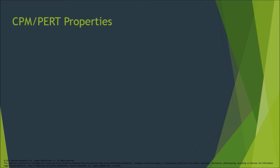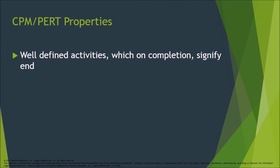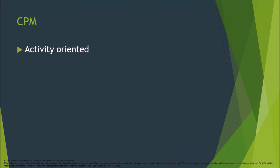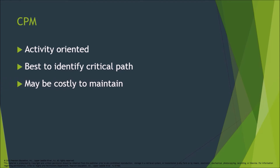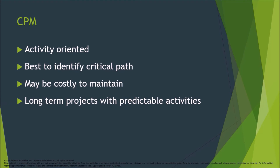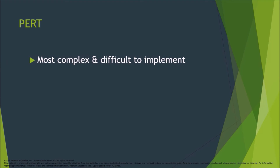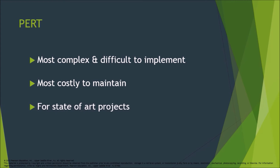CPM and PERT properties include well-defined activities which on completion signify the end, and activities that may be started and stopped independently of each other within a given sequence. CPM is activity-oriented, best to identify the critical path, may be costly to maintain, and is suited to long-term projects with predictable activities or projects with scarce resources. PERT is the most complex and difficult to implement, most costly to maintain, and is used for state-of-the-art projects.